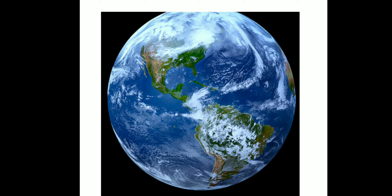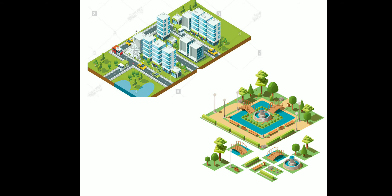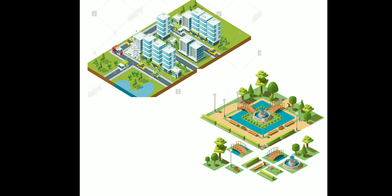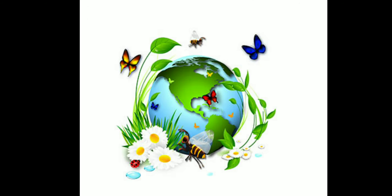Children, can you tell me what do you see around you? There are different places, houses, streets, parks around you. There are beautiful trees, flowers, birds, climates, rivers, hills and forests. All these places and things are present on our earth.